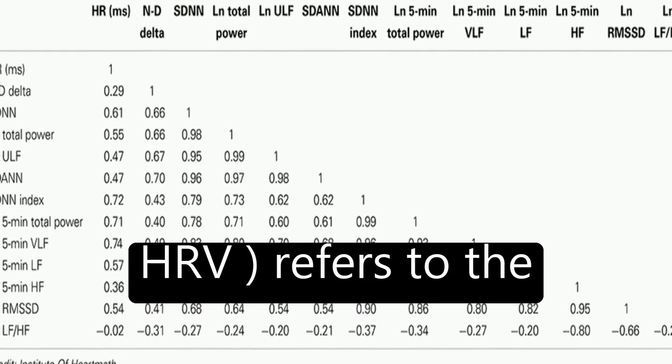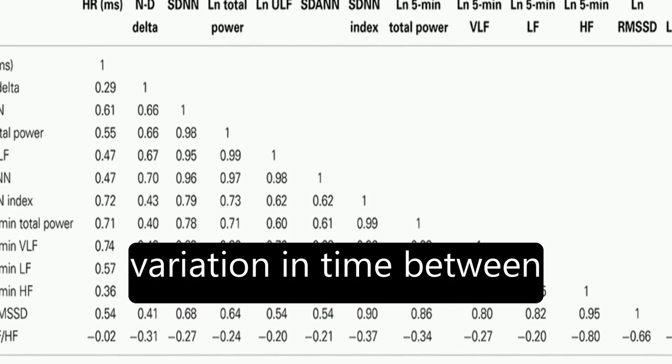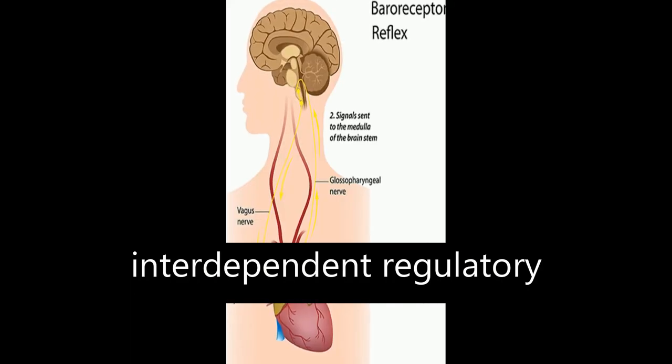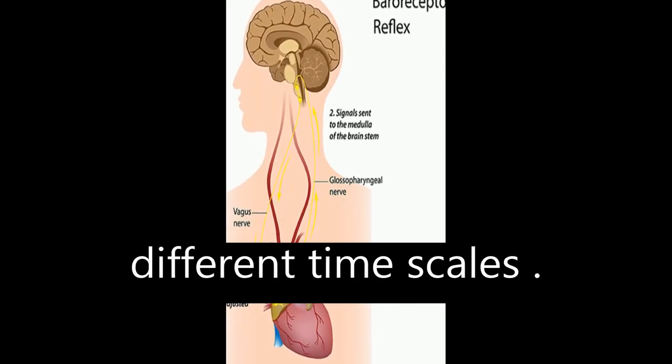Heart rate variability, HRV, refers to the variation in time between each heartbeat, which is influenced by multiple interdependent regulatory systems operating on different time scales.